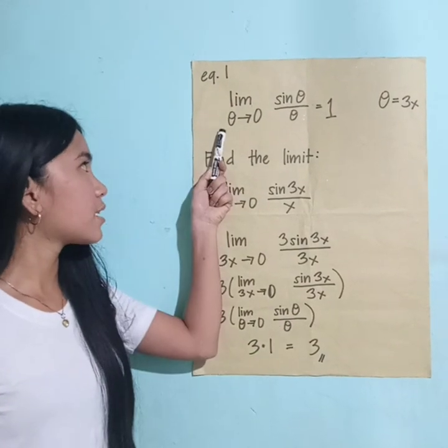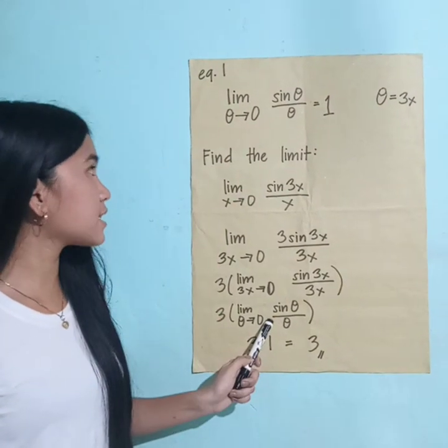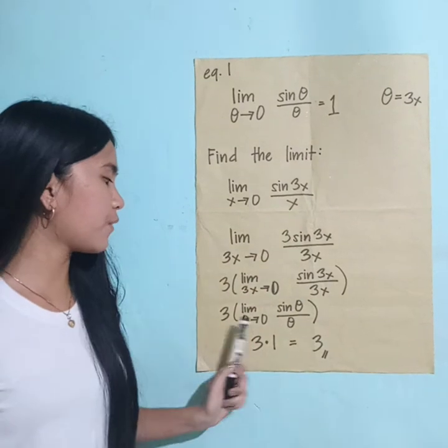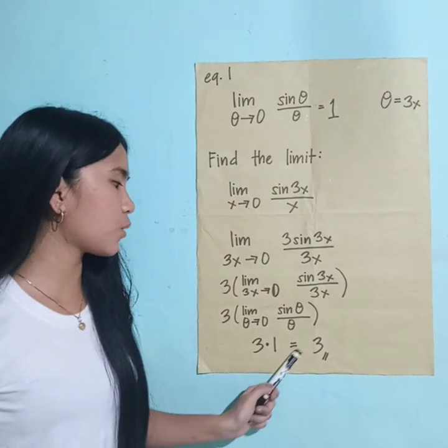And according to this equation, this is equal to 1. So we have 3 times 1 equals 3.